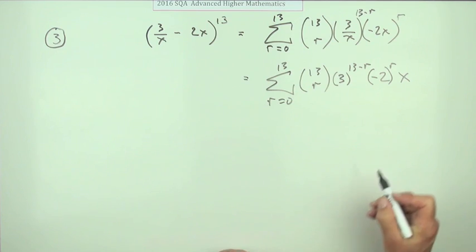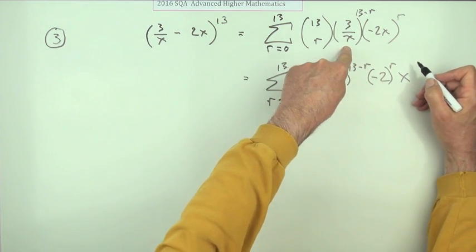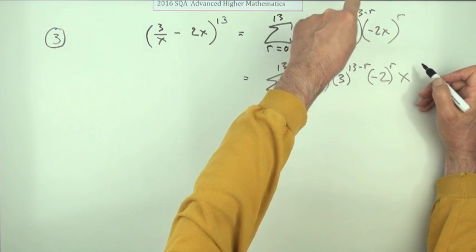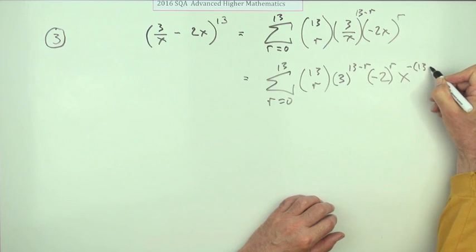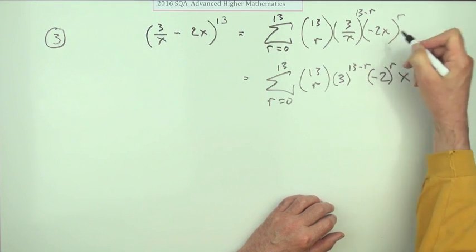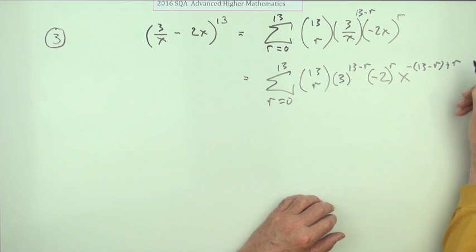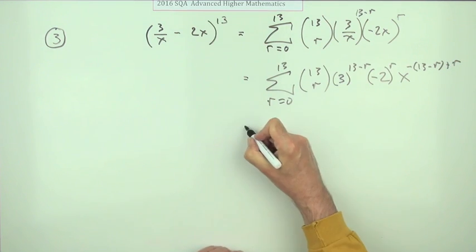And then the bit that you want, there's the x and it's made up of two parts. That will be a negative power, so I'll say the negative of 13 minus r, and then this will add on to it since it's multiplying, plus r. It's still not simplified.